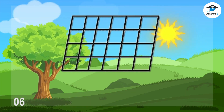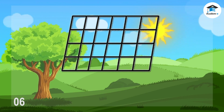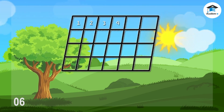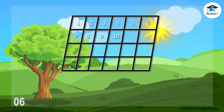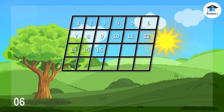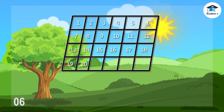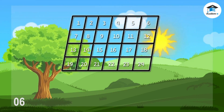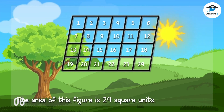Let's have another example. Look at the figure. Let's find the area of this figure — simply count all the total number of squares. Ready? One, two, three, four, five, six, seven, eight, nine, ten, eleven, twelve, thirteen, fourteen, fifteen, sixteen, seventeen, eighteen, nineteen, twenty, twenty-one, twenty-two, twenty-three, twenty-four. The area of this figure is twenty-four square units.